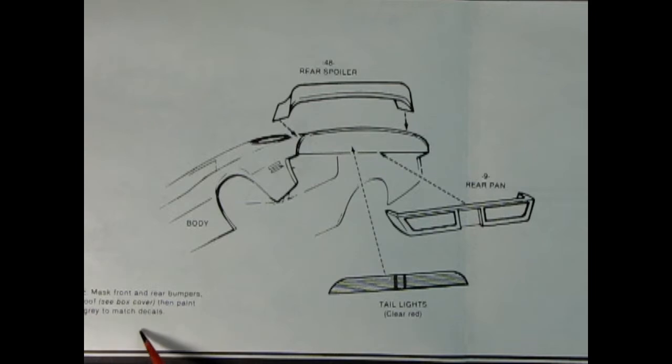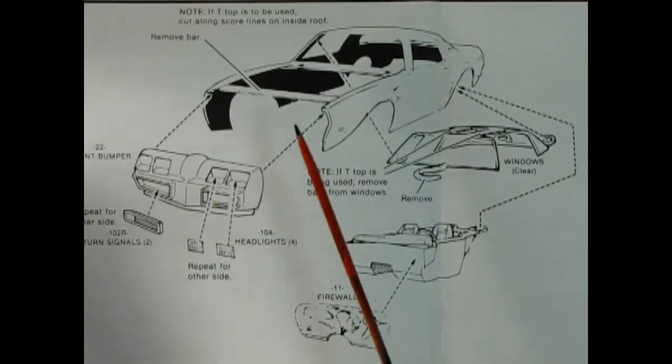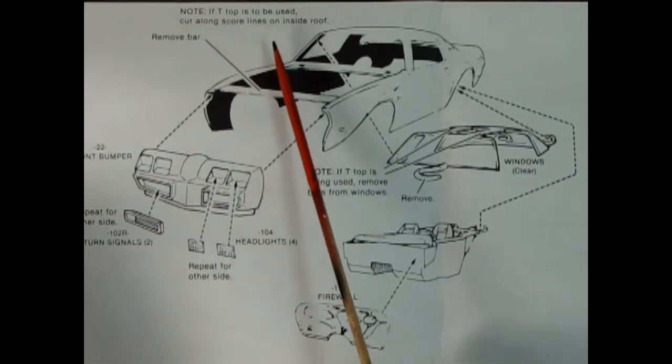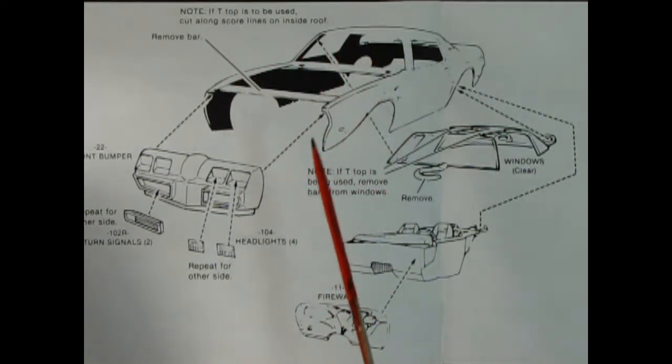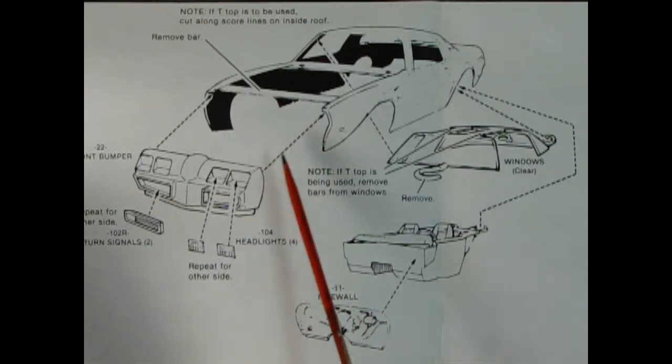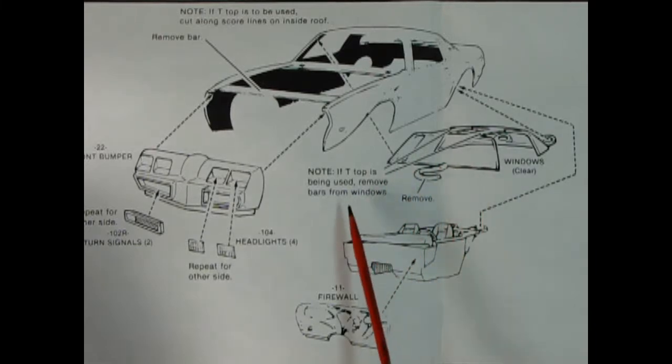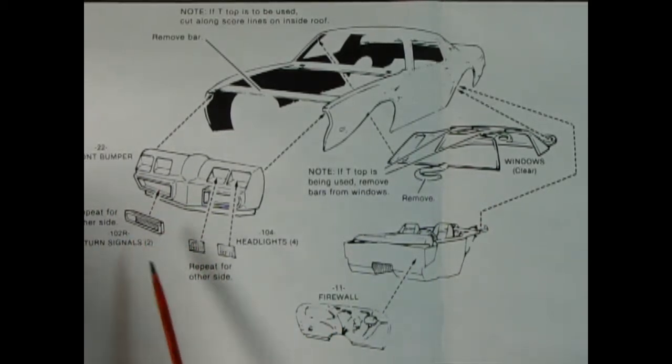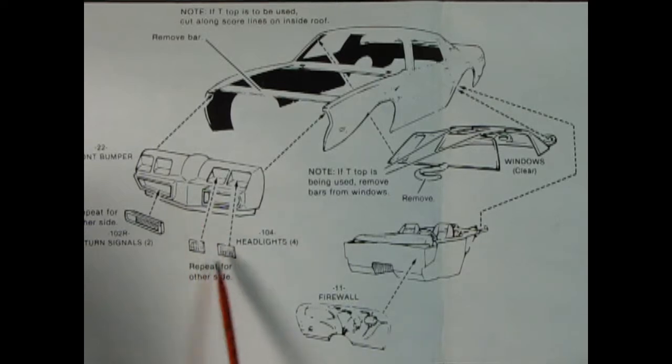Step twelve shows the body going together. It says if T-top is to be used cut along score lines on inside of the roof, remove this bar, clip off the coat hanger ring. If T-tops is being used remove bars from the windows. There's our interior going up underneath, firewall, front bumper, all these little bits, front headlights and turn signals.